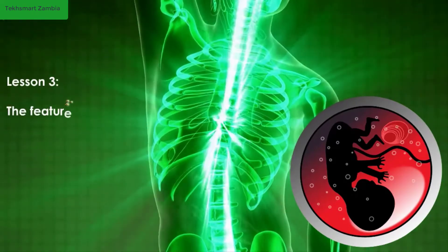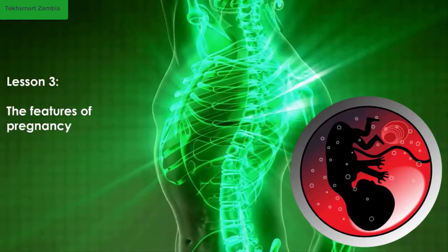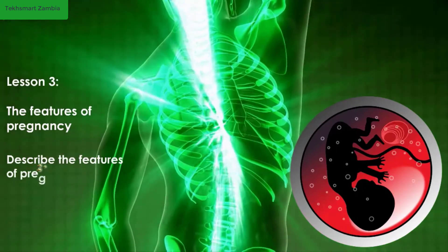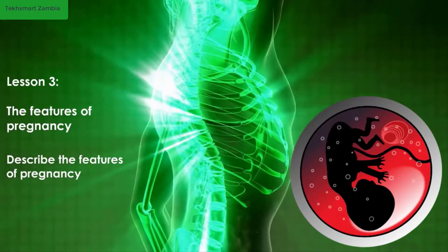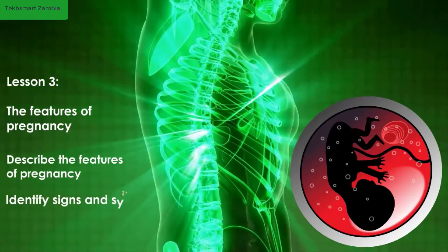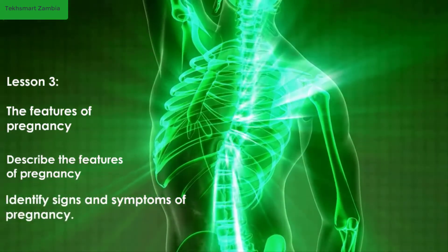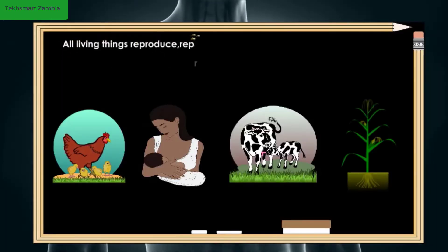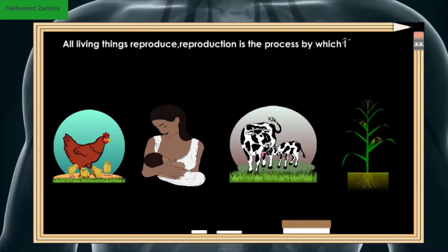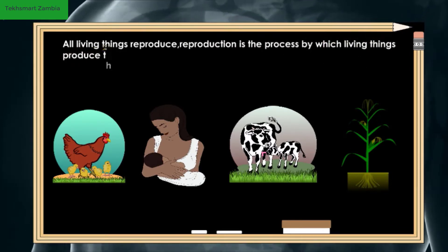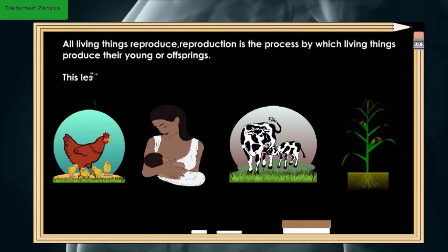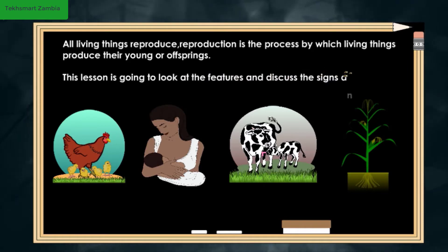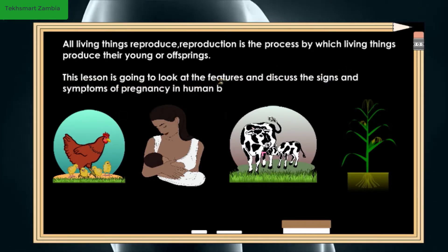Lesson three: features of pregnancy. By the end of this lesson, you should be able to describe the features of pregnancy and identify signs and symptoms of pregnancy. This lesson is going to look at the features and discuss the signs and symptoms of pregnancy in human beings.